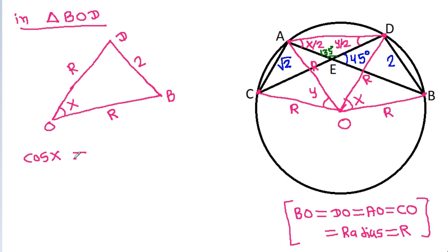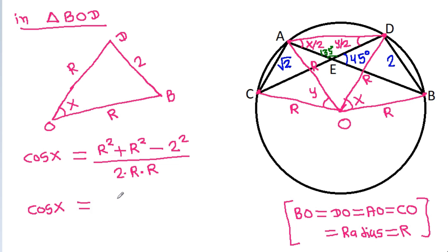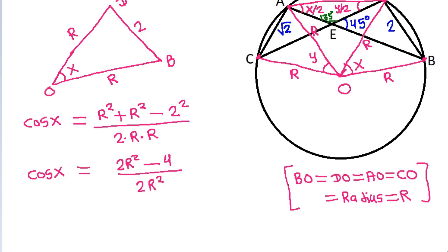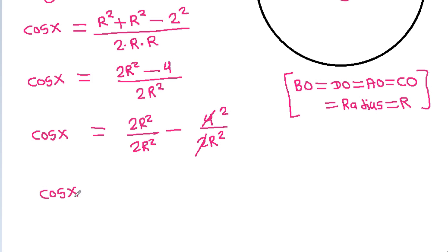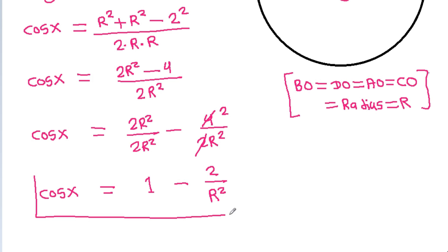So cos X equals (R² + R² − 2²) divided by (2 × R × R), which gives cos X = (2R² − 4) / (2R²) = 1 − 2/R².